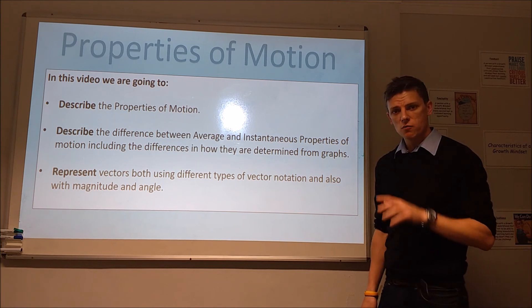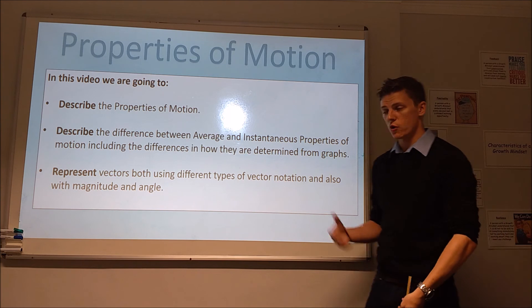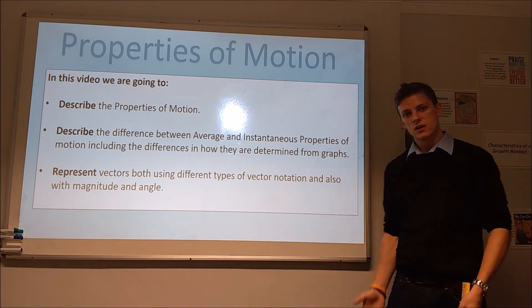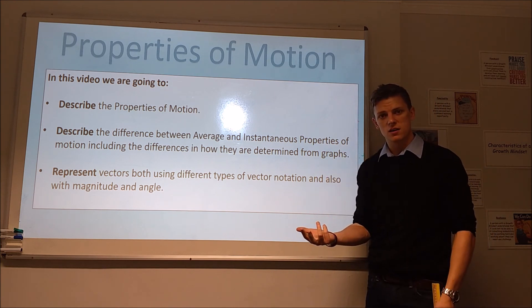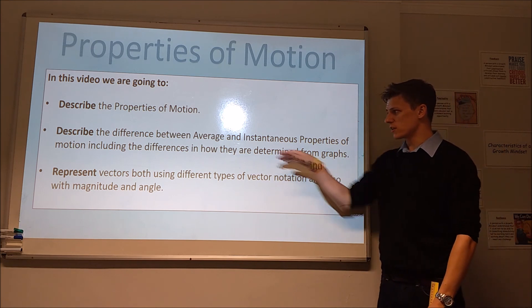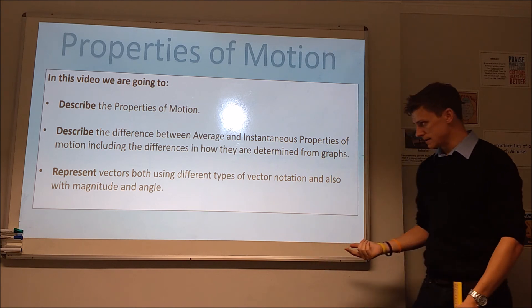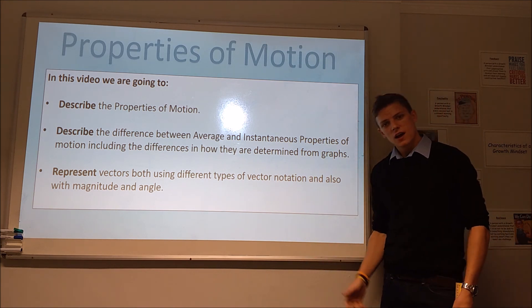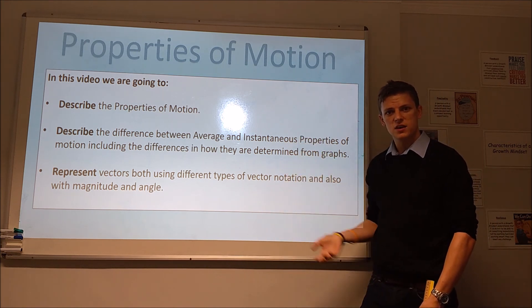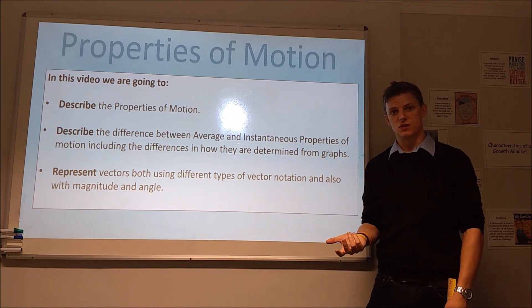Let's just review what we said we're going to take a look at in this video to finish off. I said we're going to look at different properties of motion. The properties of motion we've looked at: displacement, velocity, and acceleration. You should be able to define what those are and explain how you would calculate them from graphs. You should be able to tell me what the difference between average and instantaneous velocity and acceleration are, and the different ways they would be calculated. You should be able to represent vectors, both in those columns with the brackets, but also as a magnitude and direction using Pythagoras and trigonometry to do that as well.